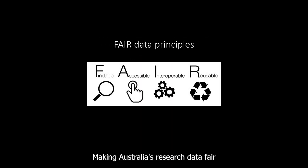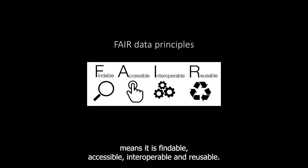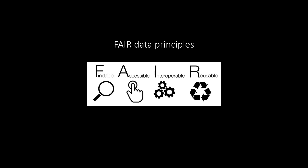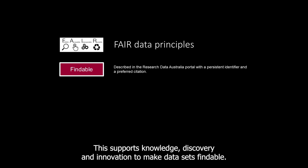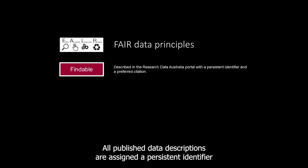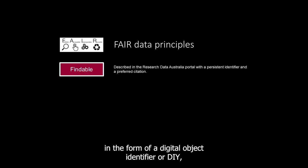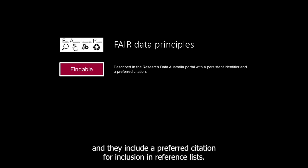Making Australia's research data FAIR means it is findable, accessible, interoperable, and reusable. This supports knowledge discovery and innovation. To make datasets findable, published data descriptions are assigned a persistent identifier in the form of a digital object identifier or DOI, and they include a preferred citation for inclusion in reference lists.